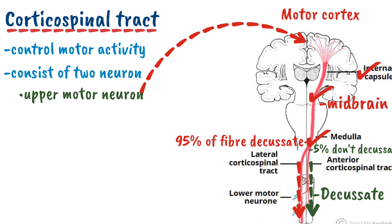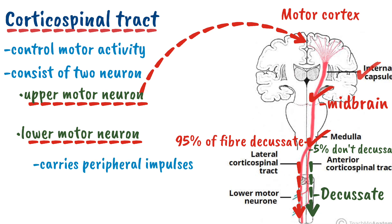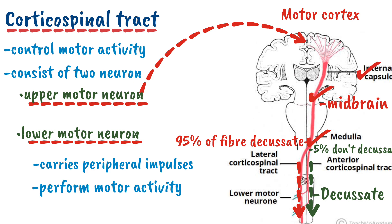This upper motor neuron synapses with another neuron in the spinal cord anterior horn cell, called the lower motor neuron. The lower motor neuron carries peripheral signals and controls the motor activity of the human body. In this way, with the help of the upper motor neuron and the lower motor neuron, the corticospinal tract controls the motor activity of the human body. That covers the spinal cord tracts — if there are any questions, feel free to ask and stay tuned for more updates.